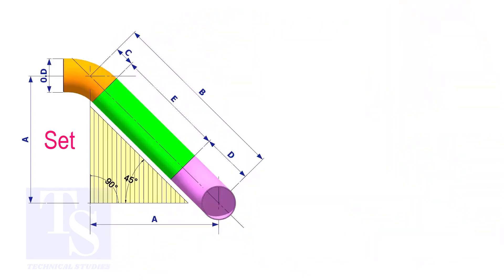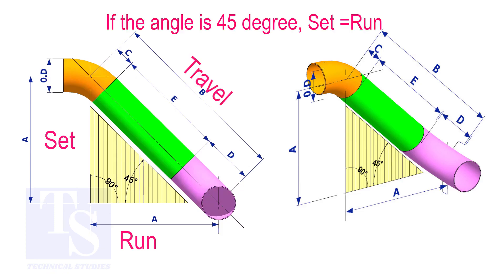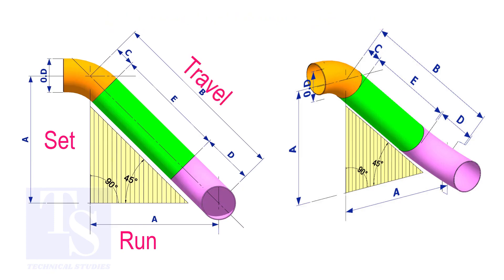In an offset, if the included angle is 45 degrees, the set and the run shall be the same. If the value of the set and the run are equal, the value of the travel is the set or the run multiplied by 1.414.